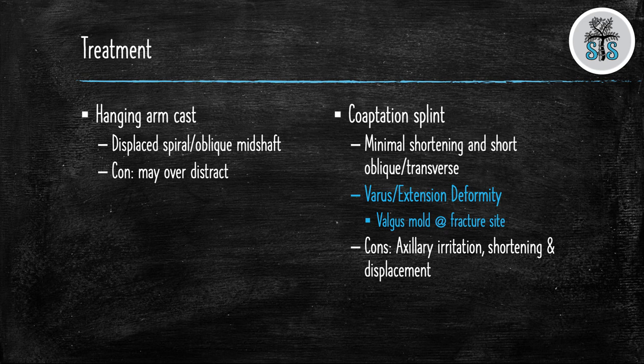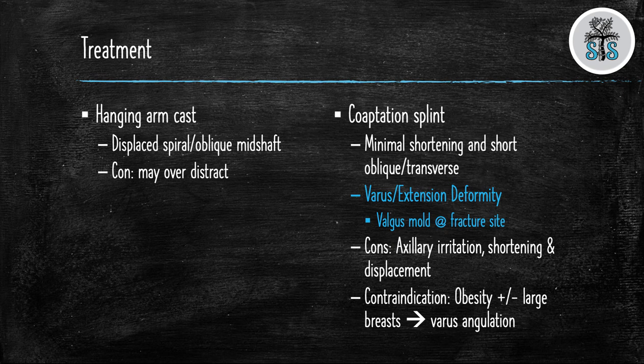The issue that arises with this splint is axillary irritation and shortening. This is because when you place the cooptation splint you must place the medial side into the axillary fold and the lateral side of the splint as high up onto the neck as you can. Obesity in patients with large breasts are contraindications to using a cooptation splint as they will fall into varus at the fracture site.